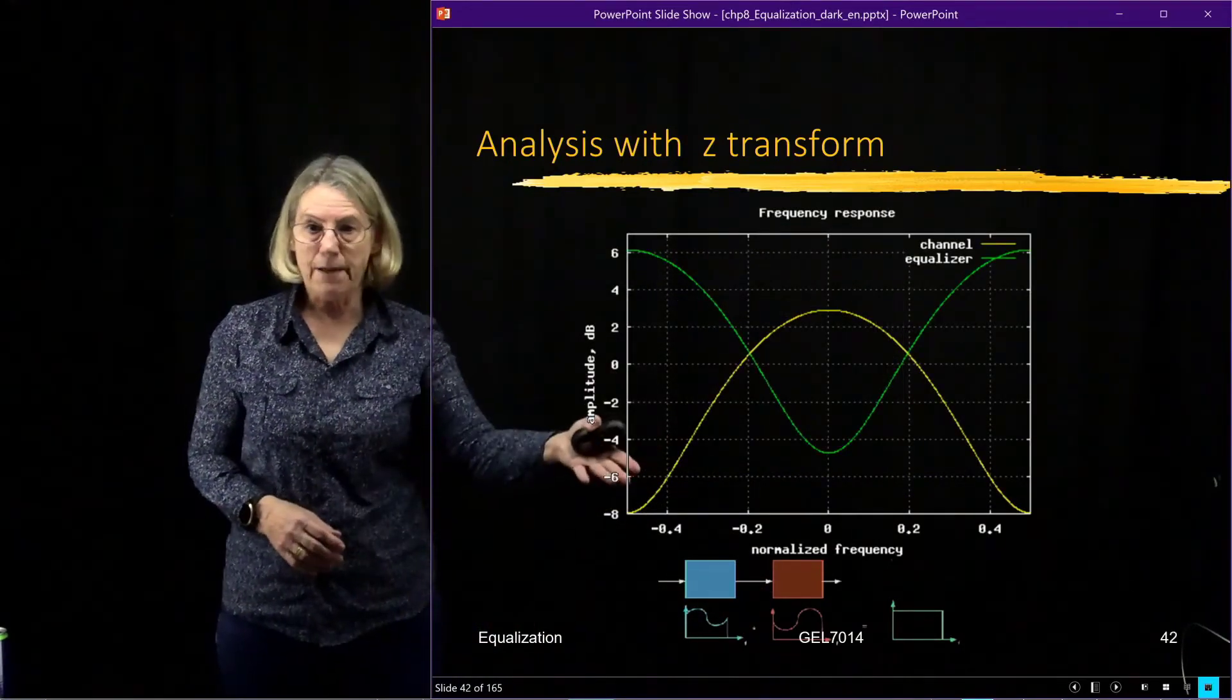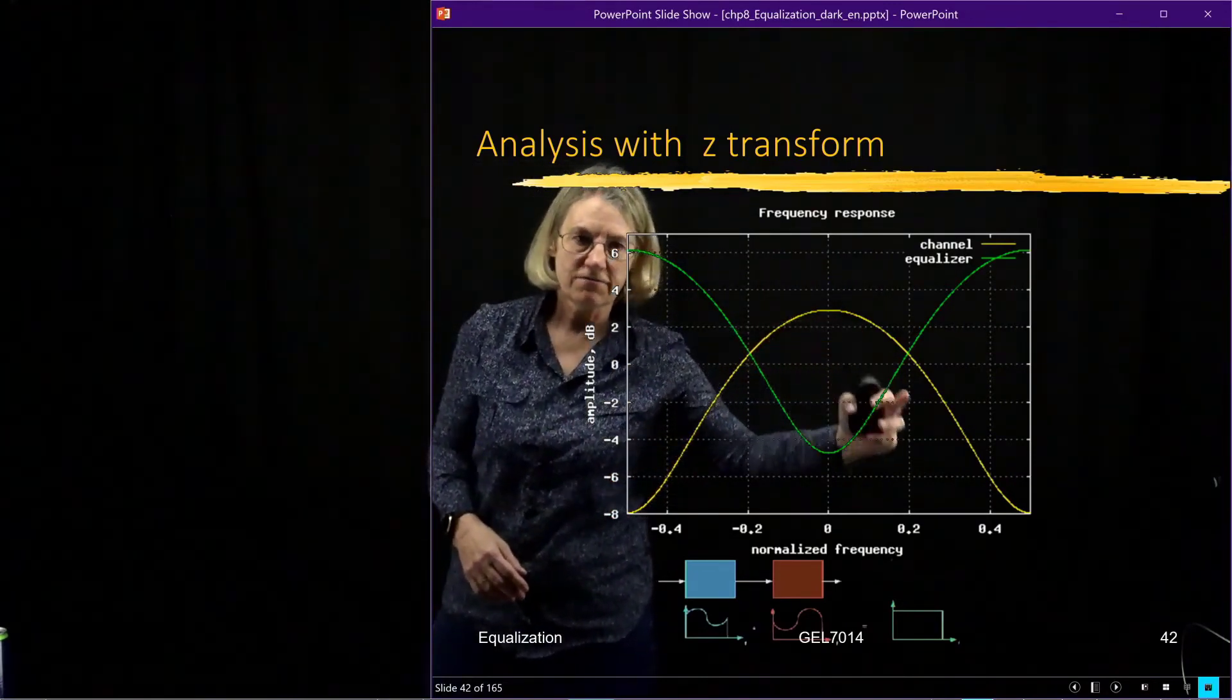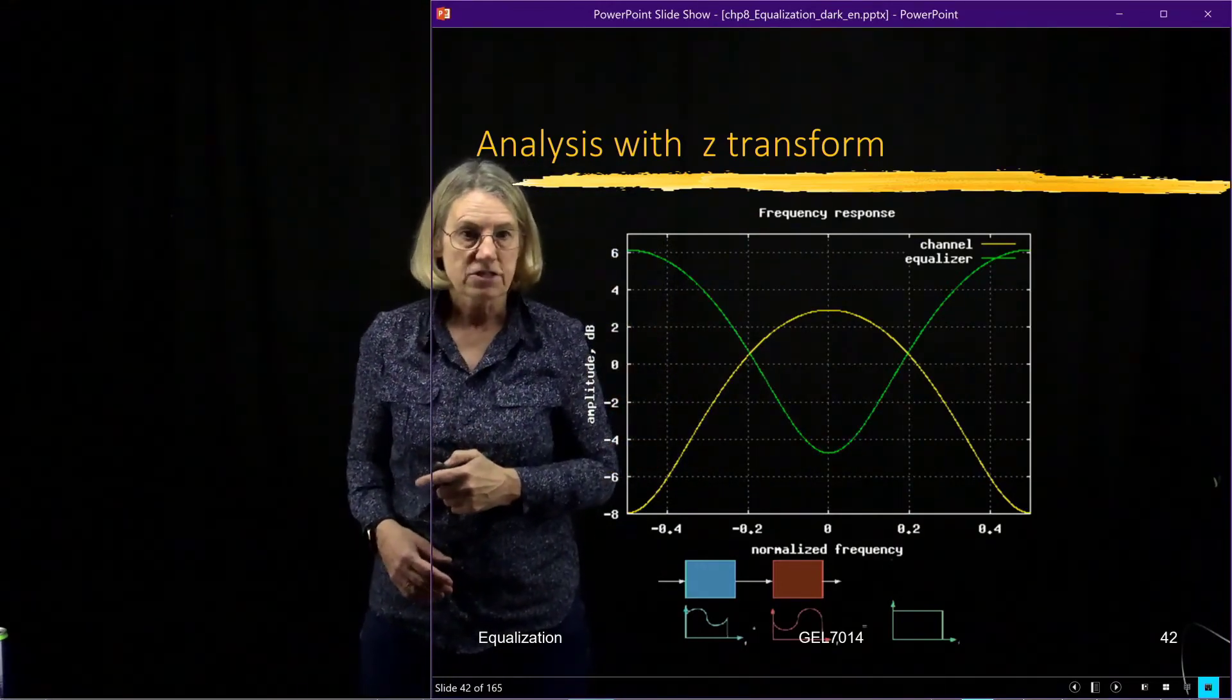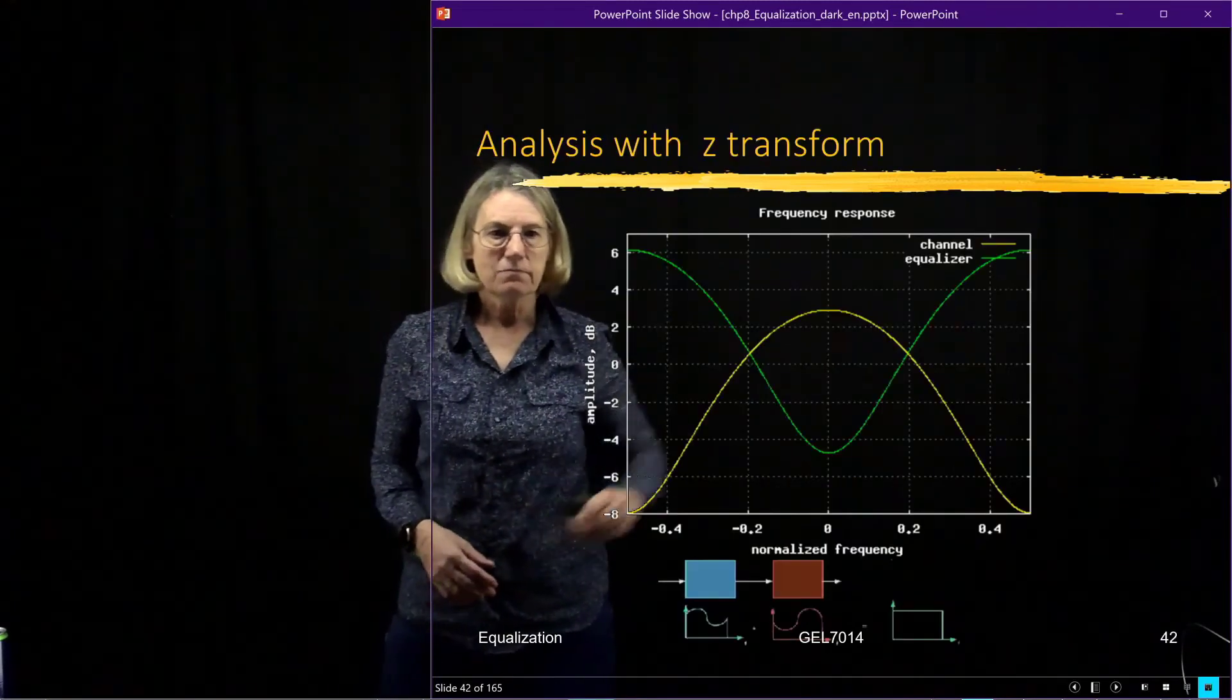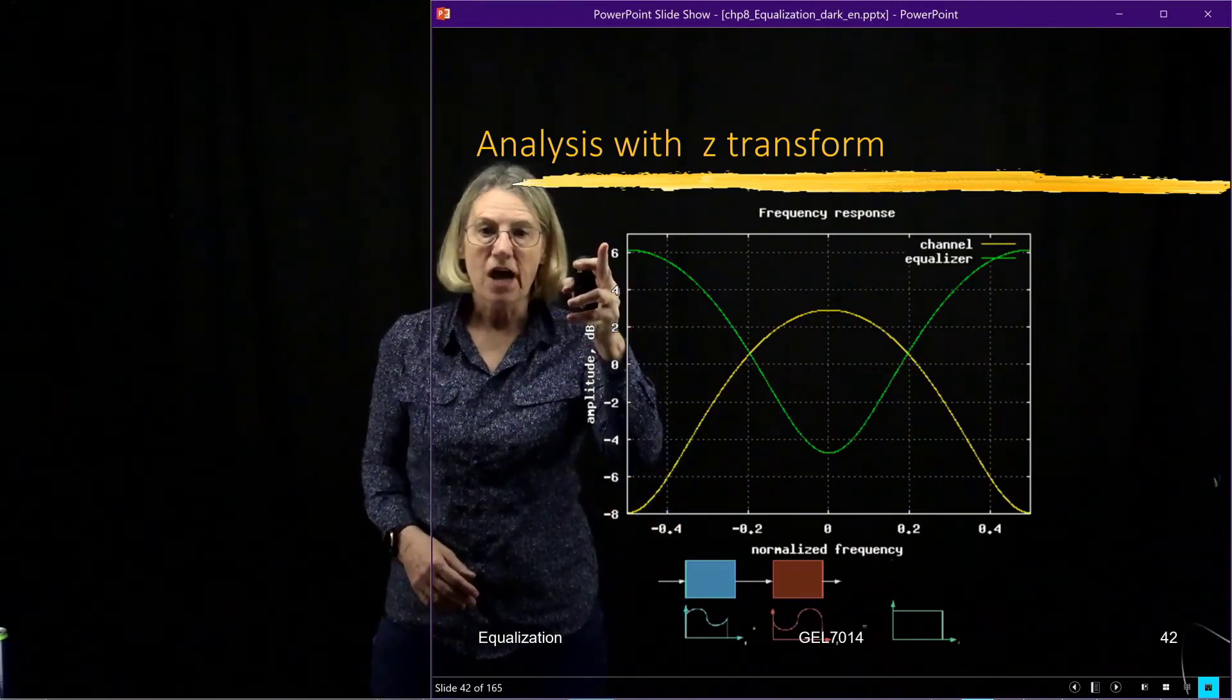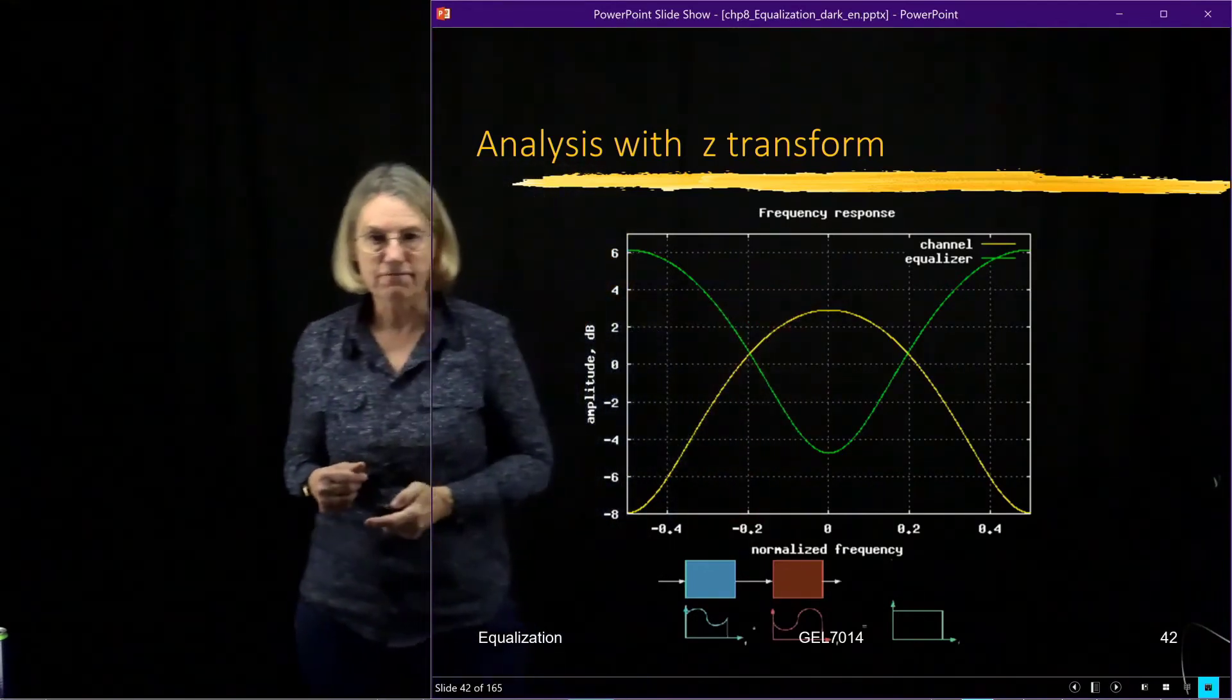So here's an example of, in yellow, the frequency response of the channel. And in green is when I take this frequency response and I look for the inverse. And if we look at this frequency response, we can see that when the channel is low, the equalizer is high. When the channel is high, the equalizer is low. It just makes it for the inverse.